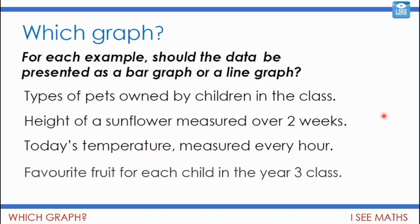For each of these examples, should the data be presented as a bar graph or a line graph? Types of pets owned by children in the class. Height of a sunflower measured over two weeks. Today's temperature measured every hour. Favourite fruit for each child in the Year 3 class. Is it a line graph or a bar graph — and why? Pause the video.